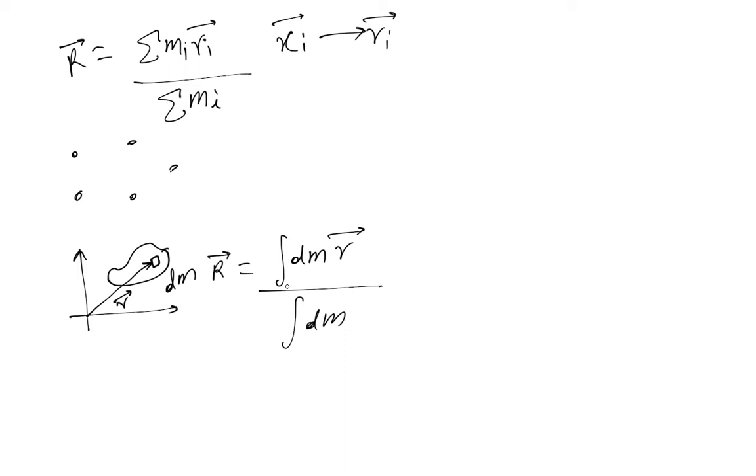So this is r and this is dm and you see dm times r is nothing but this but only for a smaller mass. And then you integrate it over the whole mass to get the numerator. Similarly, this is nothing but the sum of small small masses, small differential masses and this gives the denominator. So this is how we define the center of mass for continuous system.